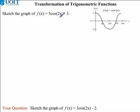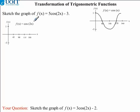Our first transformation is this 2 in front of the x, so we're going to have to draw another graph — the graph of cos(2x). This 2 in front of our x will cause our previous graph to compress horizontally by a factor of 2. What this means is that we need to take all our x-values found in this graph and divide them by 2 to find our new values.